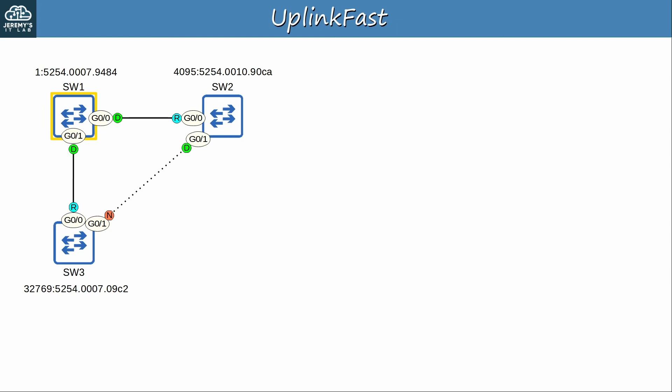Here's a basic STP topology we'll use to demonstrate both UplinkFast and BackboneFast. We have SW1, SW2, and SW3. SW1 is the root bridge, and the SW2–SW3 link is blocked because SW3 G0/1 is non-designated.